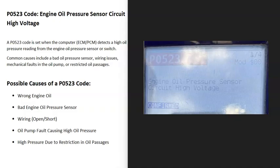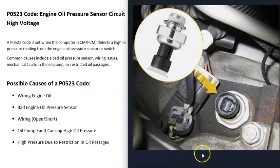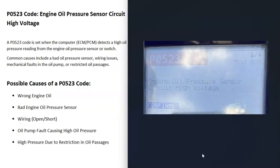Today I'm talking about a P0523 code — what it is and how you go about fixing it. A P0523 code is an engine oil pressure sensor circuit high voltage. Basically, there's an engine oil pressure sensor, sometimes called a switch, that reports back to the computer what the engine oil pressure is. If it goes too high, it triggers this code, meaning the sensor is reporting that oil pressure is too high.